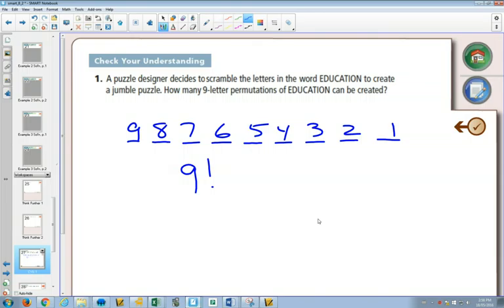Type that into your calculator. And we get a big number. 362,880. So one of the things we find out is with this strategy, we can count very large things quickly. Like that didn't take us very much effort to figure it out. And with the help of our calculator, we can find out that there's 362,880 different 9-letter permutations of the word education.